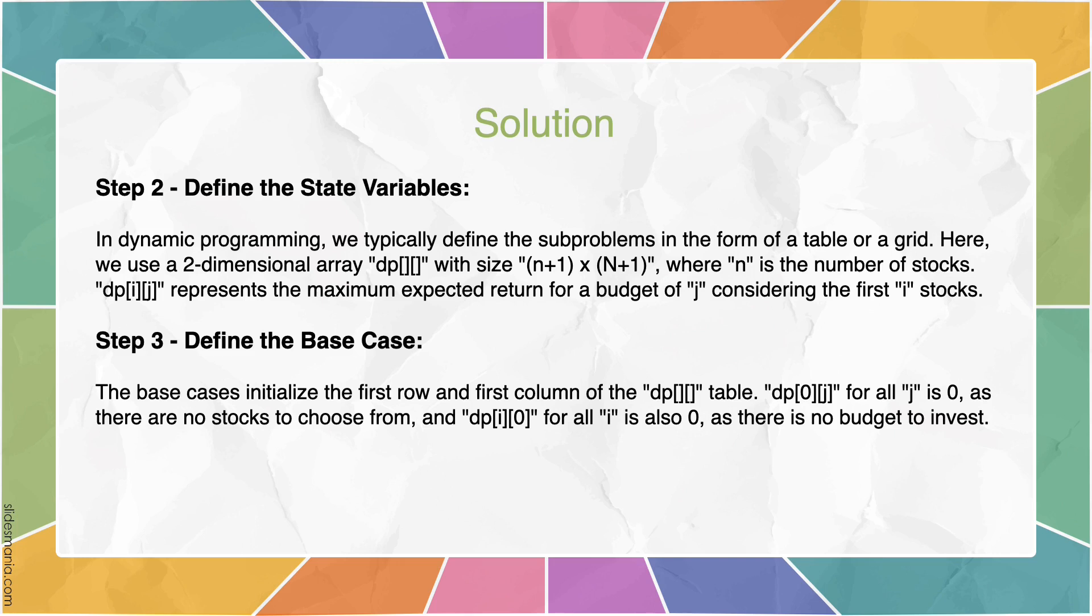In dynamic programming, we typically define the subproblems in the form of a table or a grid. Here we use a 2D array, DP, with size n plus 1 times n plus 1, while the lowercase n is the number of stocks. DP ij represents the maximum expected return for a budget of j, considering the first i stocks.